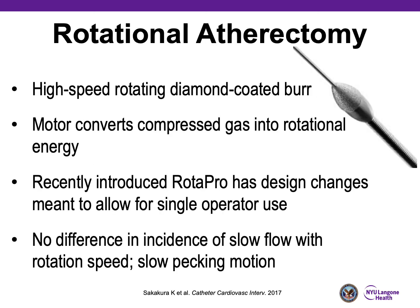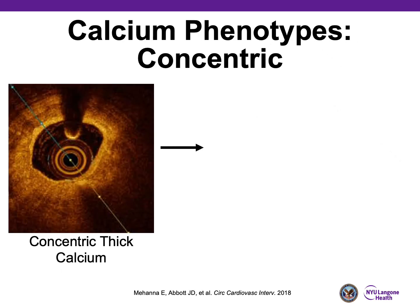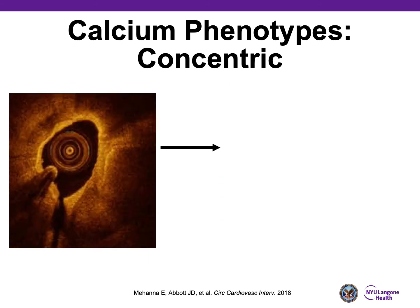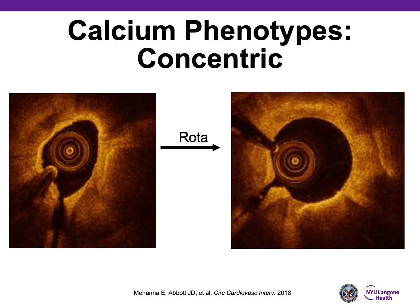Rotational atherectomy uses a high-speed rotating diamond-coated burr; the motor converts compressed gas into rotational energy. The newer generation RotoPro device has design changes for single-operator use, and at higher speeds we don't see a difference in the incidence of slow flow — if you need more cutting, you can increase rotational speed, but it's important to use a slow pecking motion. Here's an example of concentric thick calcium on OCT where treating with PTCA alone would result in severe stent under-expansion, whereas with rotational atherectomy followed by balloon angioplasty, you can achieve much better expansion.